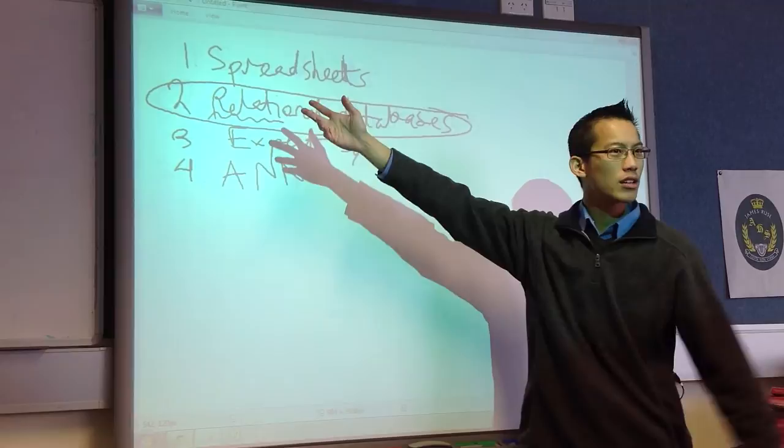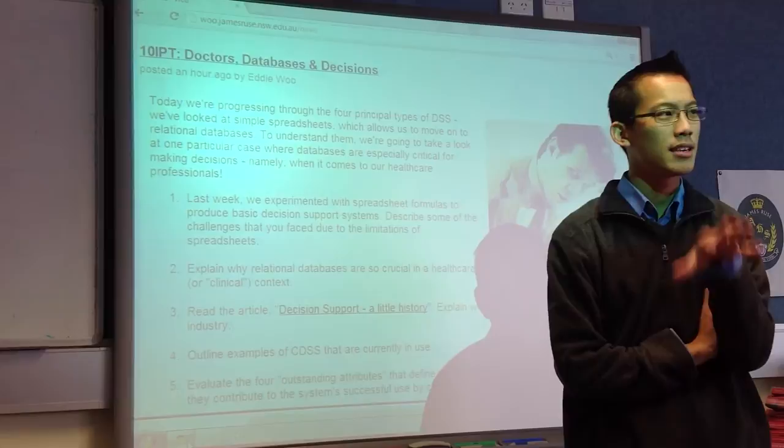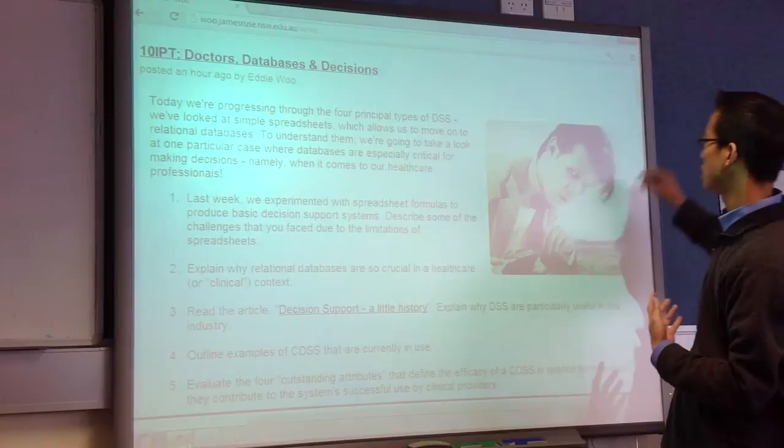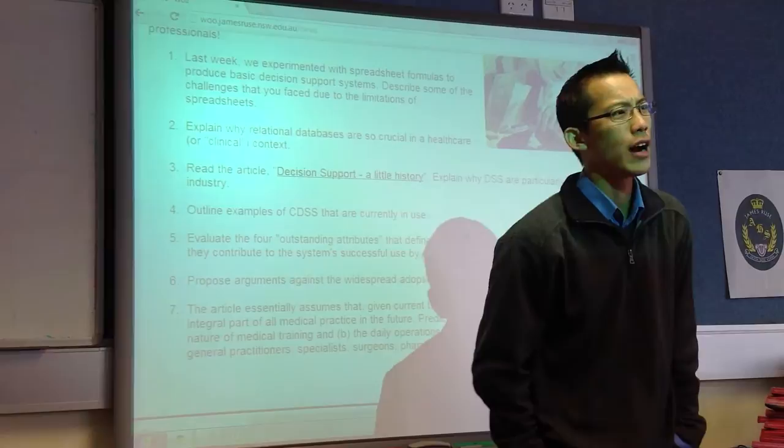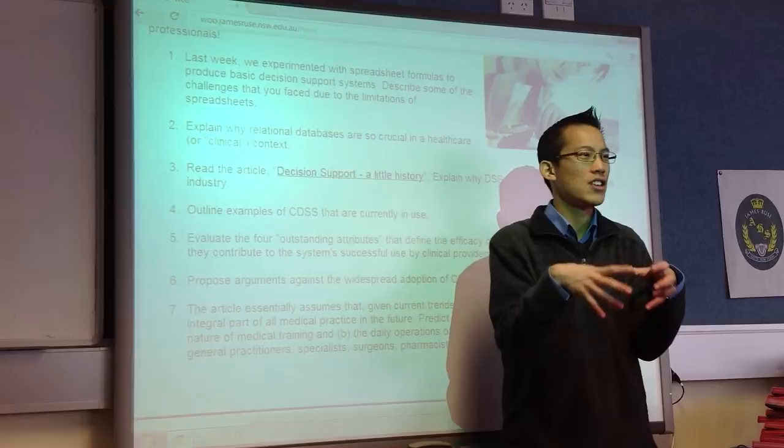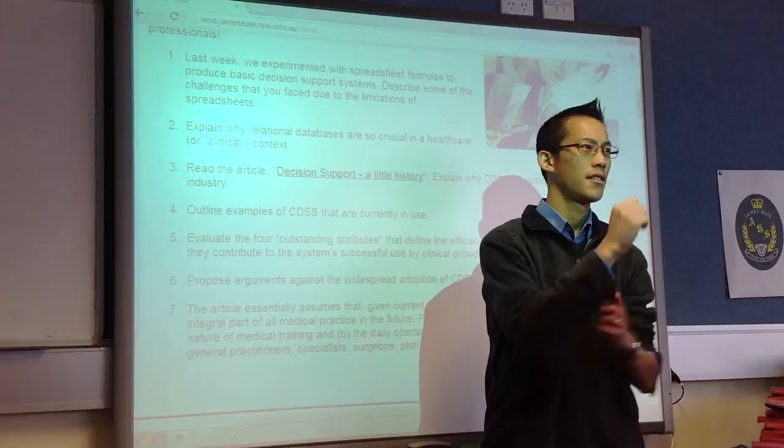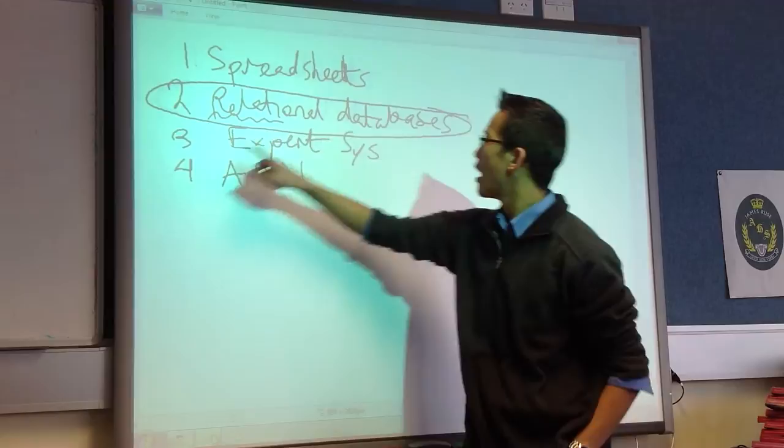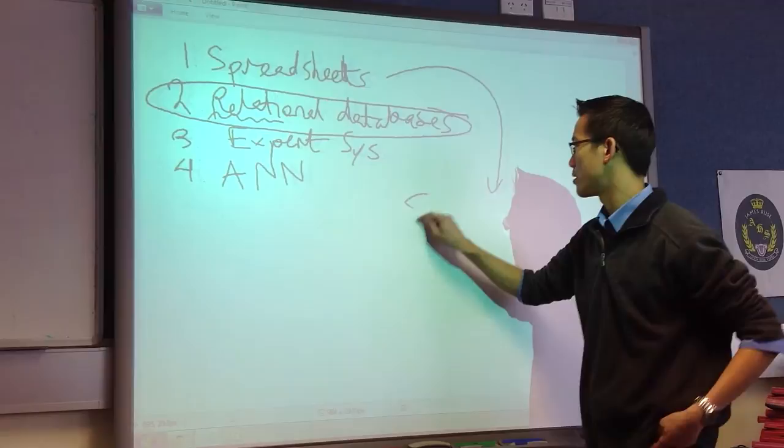Now, in order to explain why look at these kinds of things, I want to go back to last week. And you may even like to open up the basic, simple spreadsheet decision support system that you built, just to jog your memory. My question is, in the process of constructing that decision support system, what kind of challenges did you experience? What kind of things were difficult? What was frustrating? What kind of limitations did you have when you were making your decision support system? Let's get to this. We're looking at the shortcomings of spreadsheets as a decision support system.